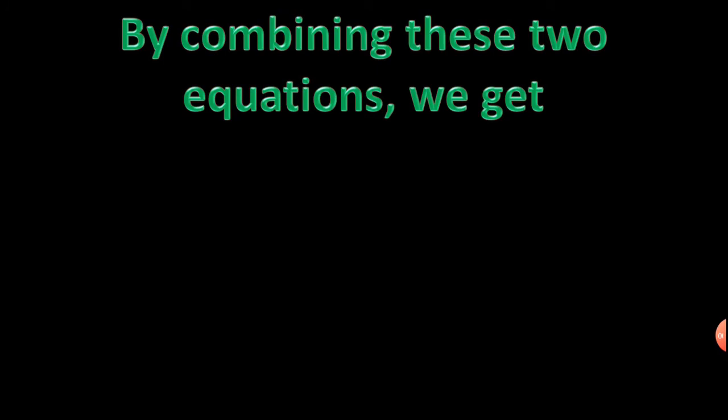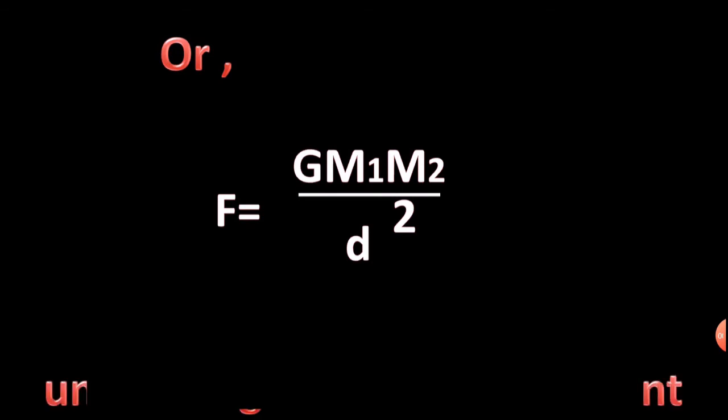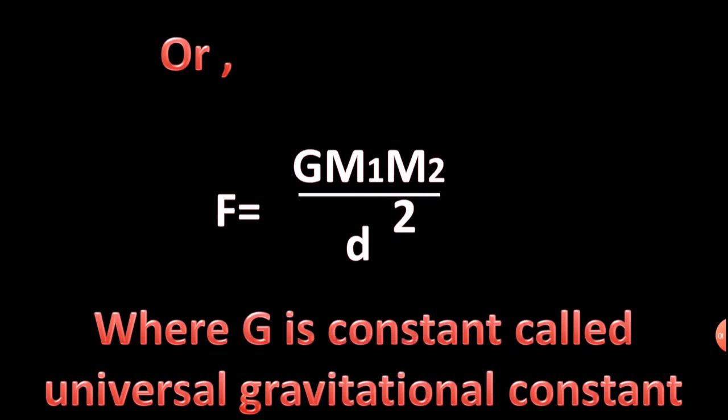By combining these two equations, we get F directly proportional to M1 and M2, or the product of M1 and M2, inversely proportional to the square of the distance between their centers. Or F equals G M1 M2 upon D square, where capital G is constant called universal gravitational constant.